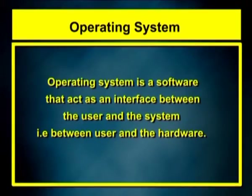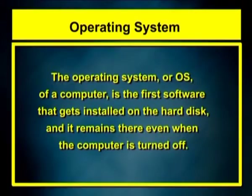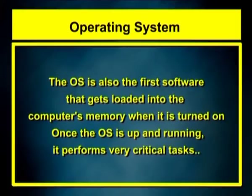So let us begin with the topic. Before learning what operating system security is, let us first understand what is operating system and what functions does it perform. Operating system is a software that acts as an interface between the user and the system, that is between user and the hardware. The OS is the first software that gets installed on the hard disk and it remains there even when the computer is turned off.